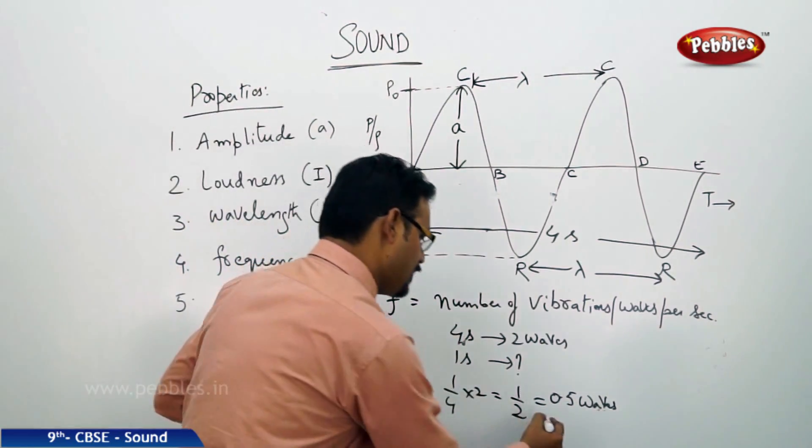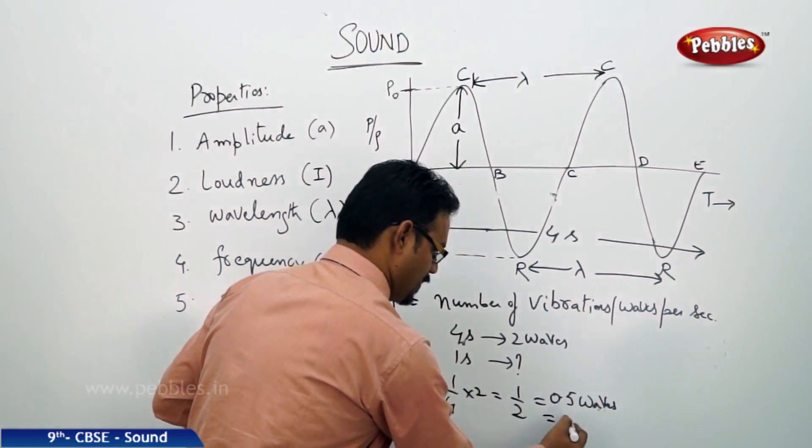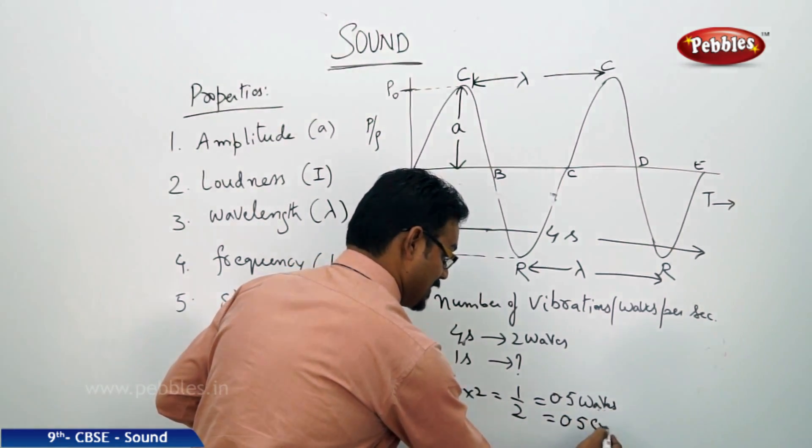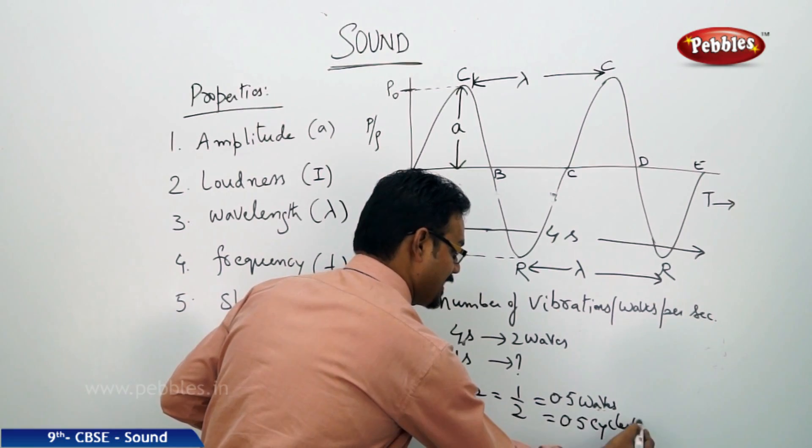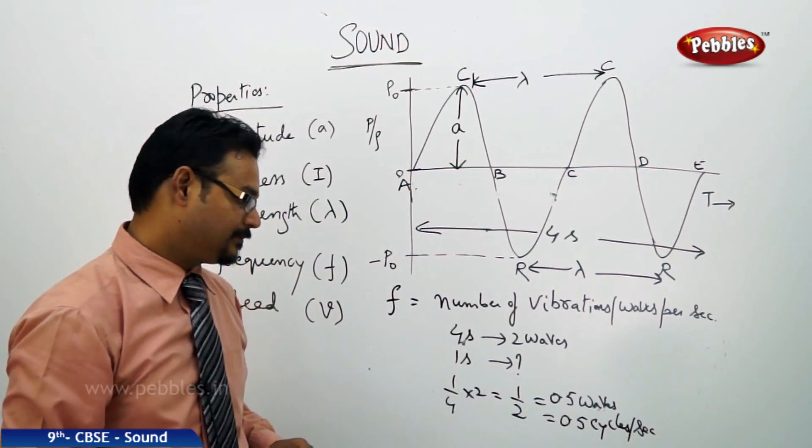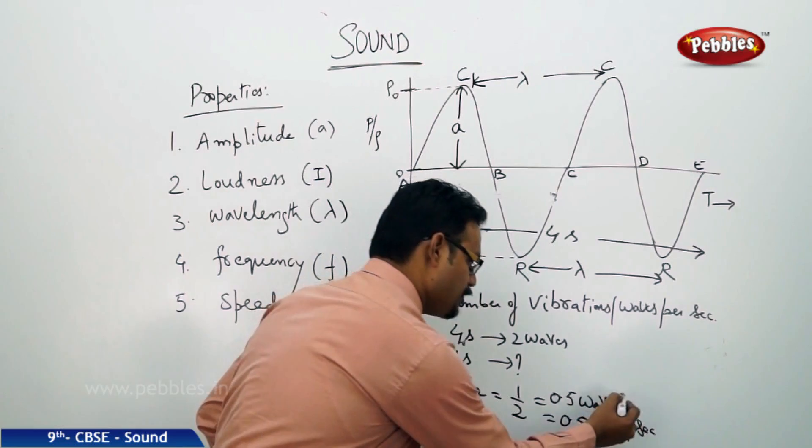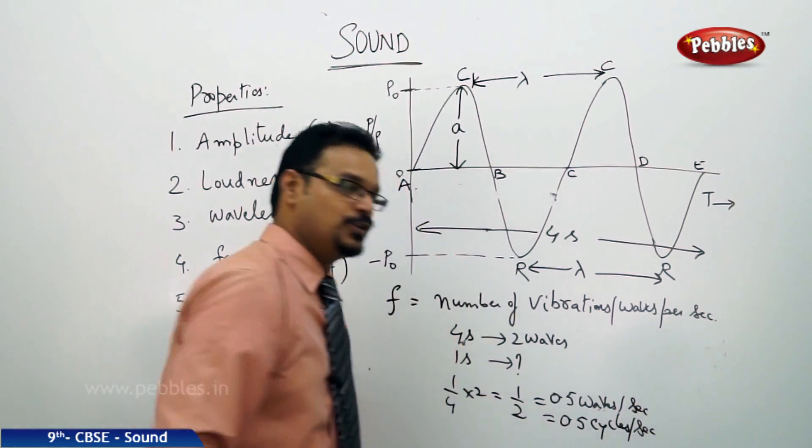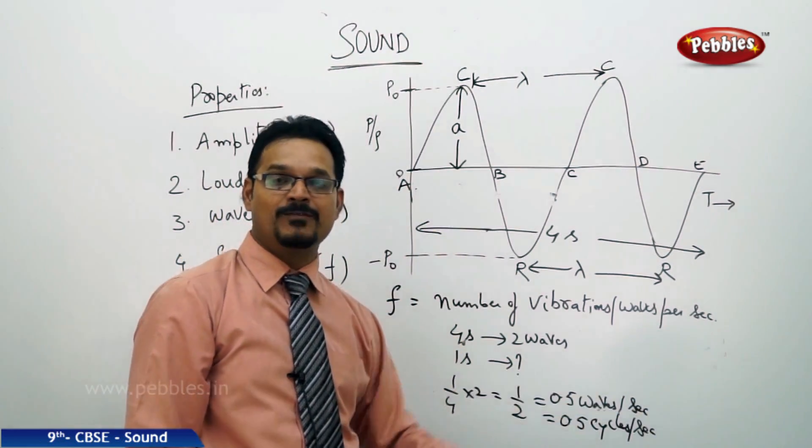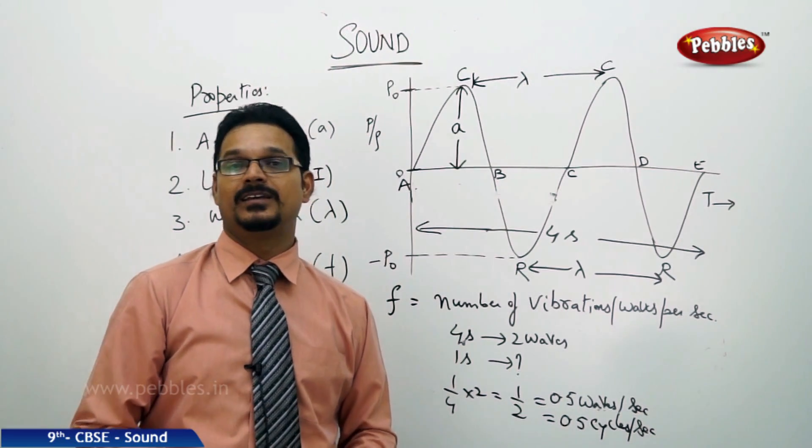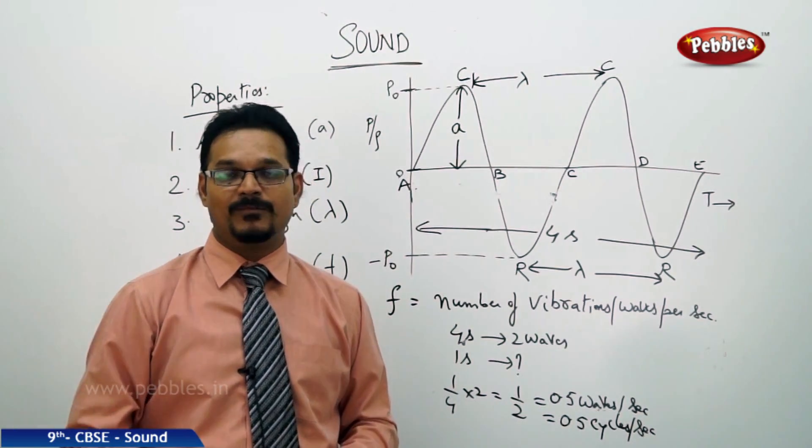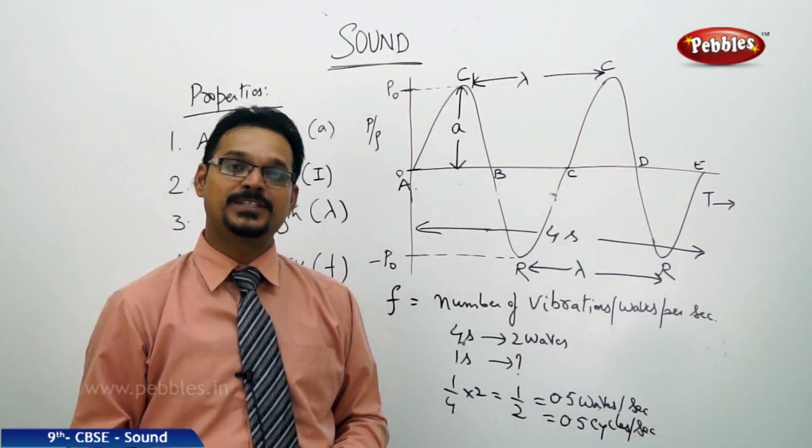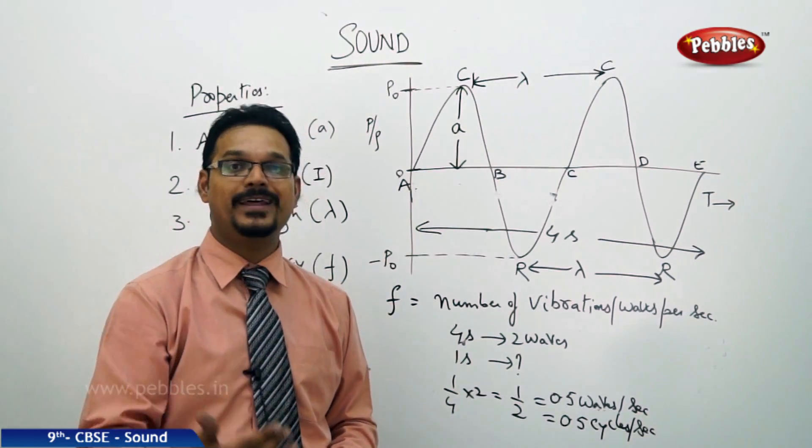So, 0.5 waves per second or 0.5 cycles per second. See, this is a unit of frequency. 0.5 waves per second, you can write 0.5 cycles per second. What is cycle? Don't think it's a bicycle.